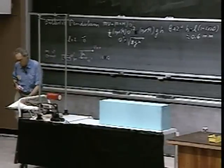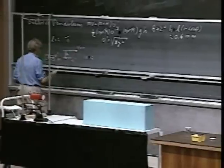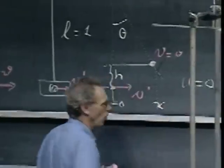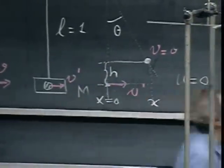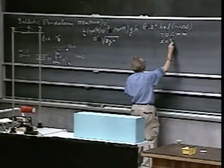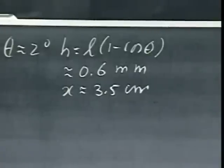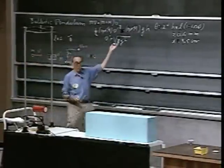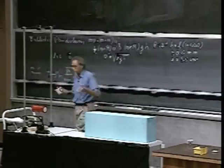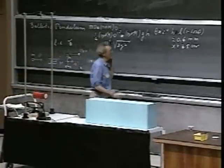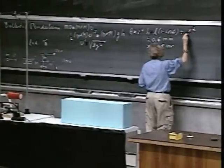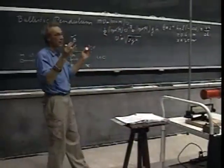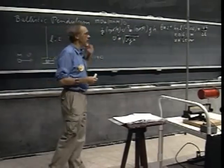So we are going to not measure h, but measure x. I call x equals zero at the bottom, and x is the horizontal displacement when the pendulum comes to a halt. For a 2-degree angle, x is approximately 3.5 centimeters — you get a huge displacement in x compared to h. Using the small-angle approximation — and 2 degrees is very small — you can prove, using the Taylor series expansion of cosine, that h is approximately x squared divided by 2L.